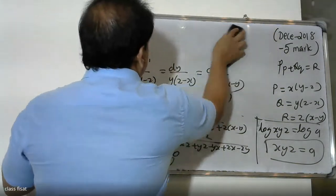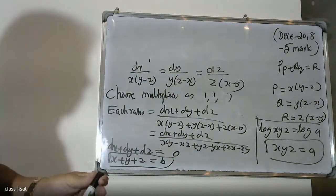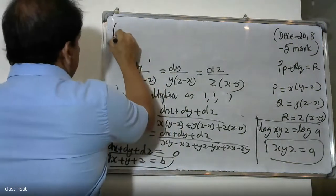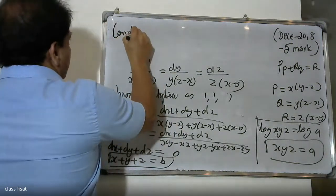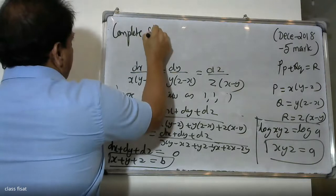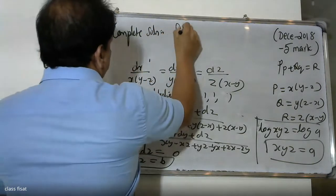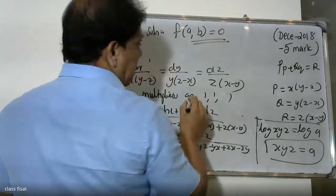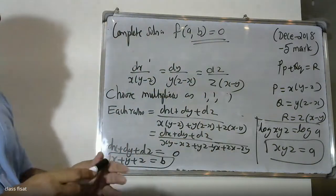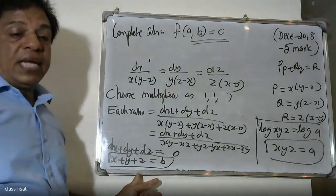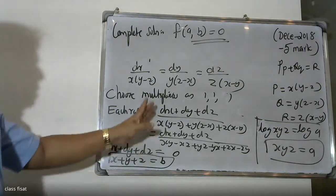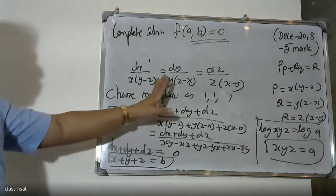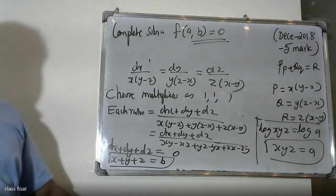Therefore the complete solution is f(a,b) = 0, where a = xyz and b = x + y + z. This is the complete solution to the problem.